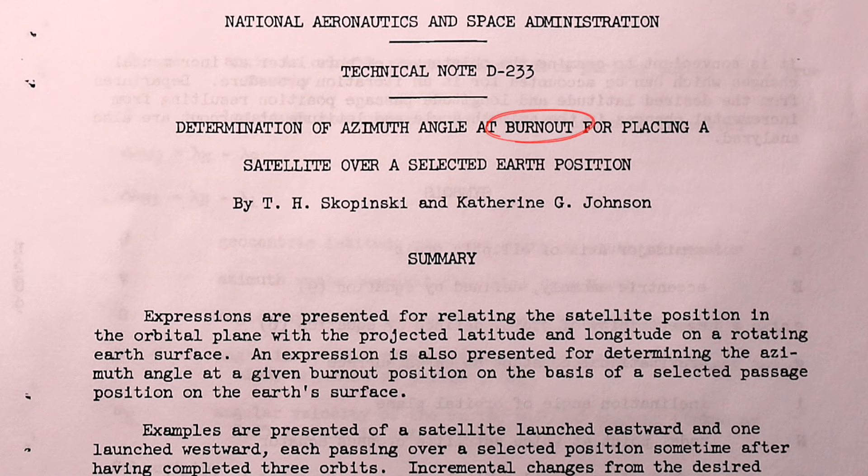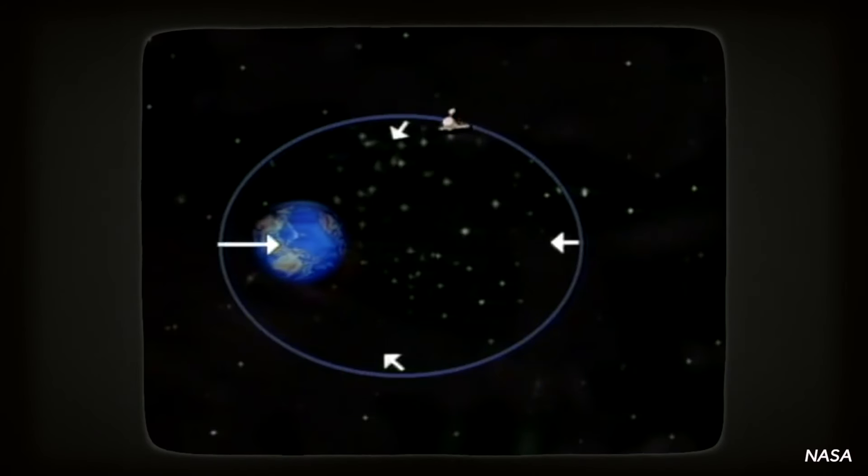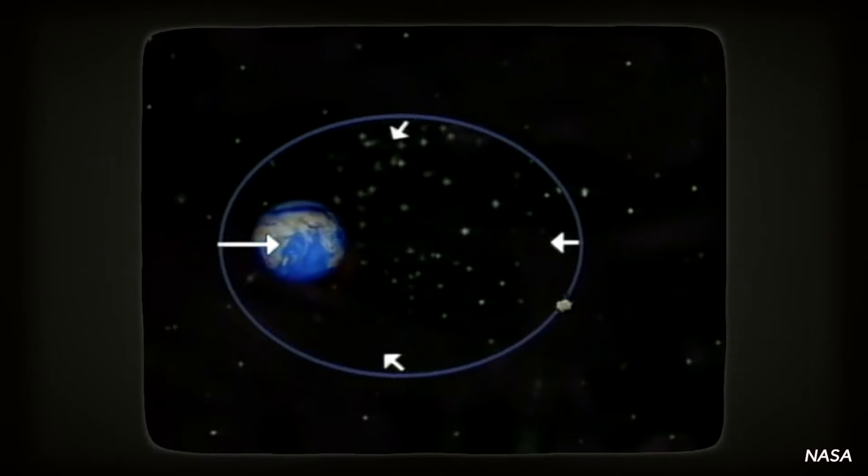And burnout refers to the shut off of the rocket engine. So after the burnout point, the orbital parameters are essentially locked in, and we can then just work with Newton's laws and other equations to find out where it's going to be.